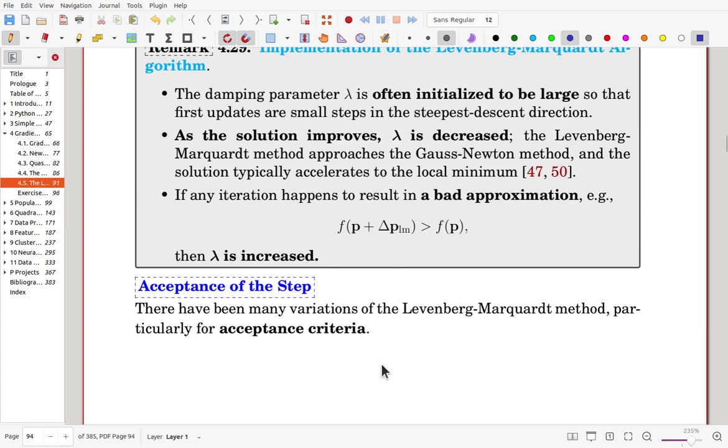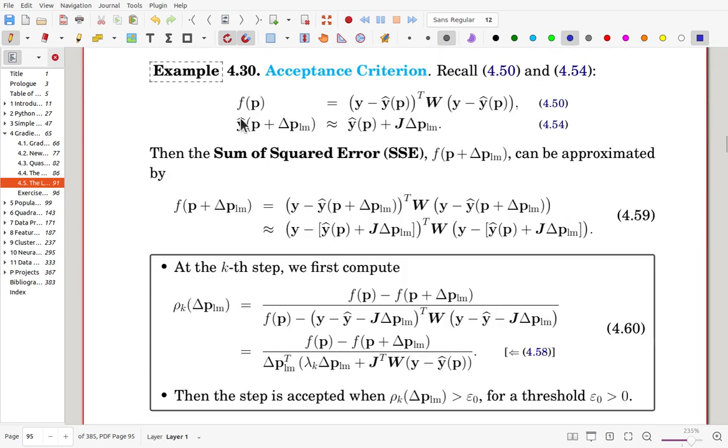There are many variants of the Levenberg-Marquardt method, particularly for acceptance criteria. Let's see one example. Here we have one example of acceptance criteria. Here we collected the equations. f(p) is defined in this way, and it is now approximation used in Gauss-Newton method. Now here, for that new parameter, the value is defined in this way. And then rather than that one, we are using this approximation. Then we use the approximation. Then this value and that value may not be the same, but it's a good approximation.